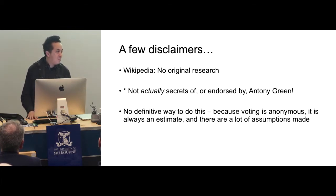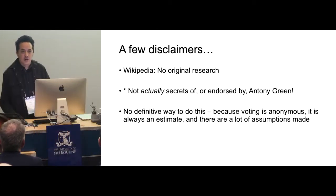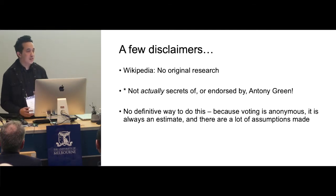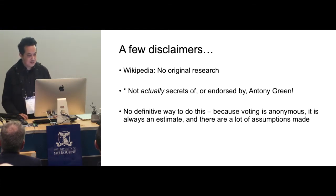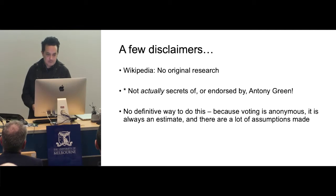Now the last disclaimer, and I'll come back to this at the end: there is no definitive way to do this because we have anonymous voting. It's always going to be an estimate, with different ways to model it and a lot of assumptions made. People can use pretty much similar methodologies but come up with different numbers, and I'll show you some of those differences. There's no right or wrong way to do it — all you can do is try and model it as best you can.